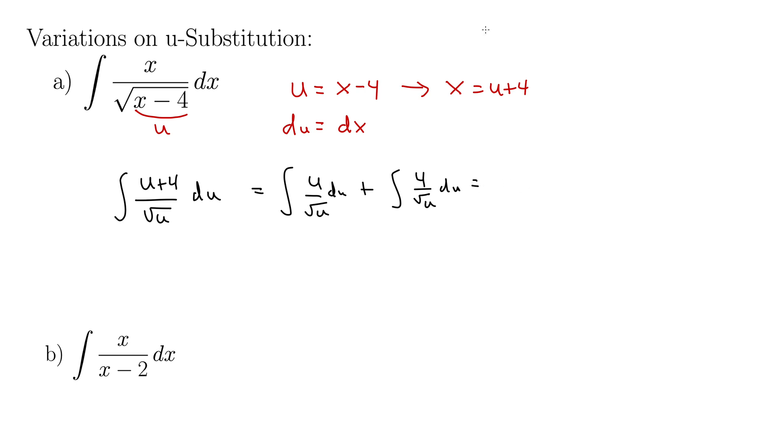And then, well, the square root of u is u to the 1 half, so we can think of the first integral as u to the 1 minus 1 half plus 4 times the second integral we'll write as u to the negative 1 half, du, du. So really we're looking at...